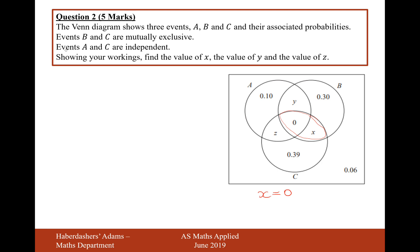Now we move on to the next little piece of information. Events A and C are independent. So what that means is that the two events should follow this rule. The probability of A and C is equal to the probability of A times the probability of C. Okay, so let's work out what the probability of A and C is. That's just going to be the overlap of events A and C. So that's going to be Z.